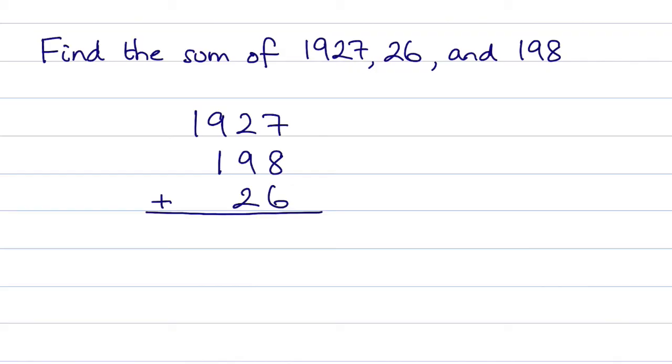I can then start to add so we've got 6 and 8 is 14 plus the 7 is 21. So write down the 1 and carry a 2.